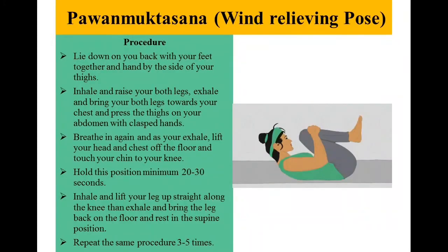Pavanamuktasana, Wind Relieving Pose. Procedure: Lie down on your back with your feet together and hands by the side of your thighs. Inhale and raise both legs. Exhale and bring both legs towards your chest and press the thighs on your abdomen with clasped hands. Breathe in again and as you exhale, lift your head and chest off the floor and touch your chin to your knee. Hold this position for a minimum of 20 to 30 seconds. Inhale and lift your leg up straight. Then exhale and bring the leg back to the floor and rest in the supine position. Repeat the same procedure 3 to 5 times.